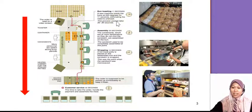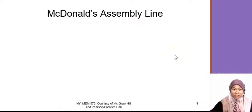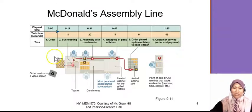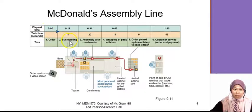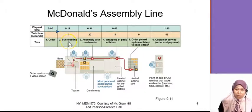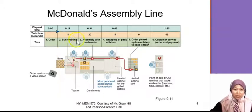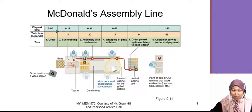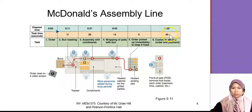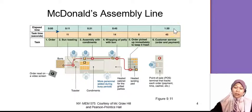Layout is not only in manufacturing but also in services. Looking at the timing in detail: the order comes in, and within 11 seconds the bun is already toasted. Within 20 seconds they assemble, then 14 seconds for wrapping and putting into the racking, and the order goes straight to the customer. Total time is about less than two minutes — a very fast process.